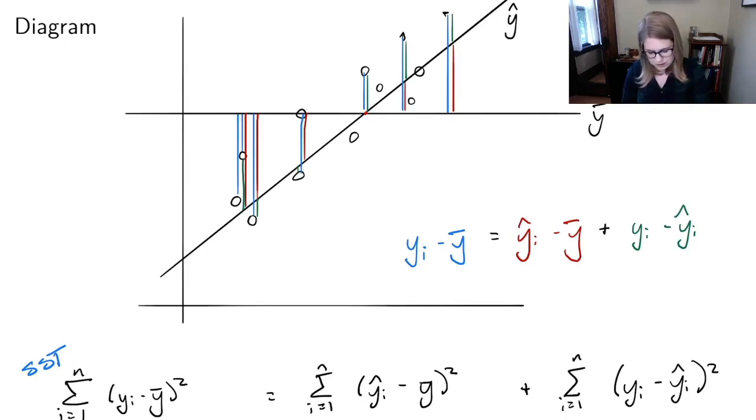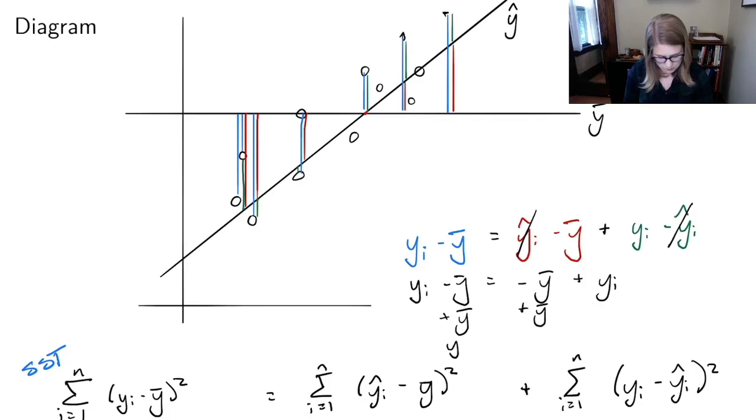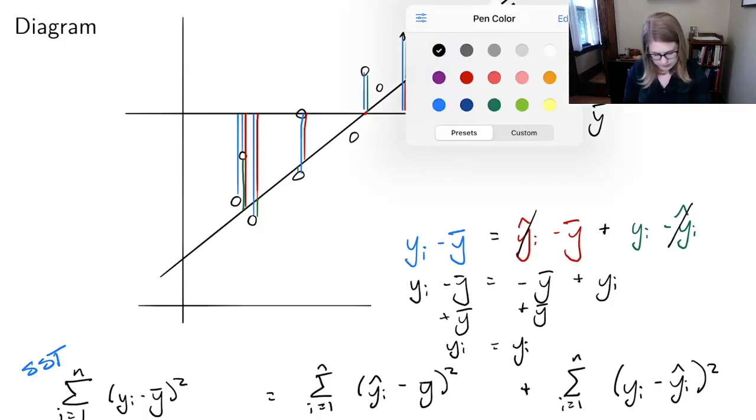And we could do a little bit of arithmetic. I'm going to erase some of my axis here so that I have some more room for my arithmetic. I could cancel some y_i hats because I've got plus y_i hat and minus y_i hat. So then I'd have y_i minus y bar is equal to negative y bar plus y_i. I could add y bar to both sides. And I've just got y_i is equal to y_i. So it should always work out that those things balance out. And that's what I've got the colors for.